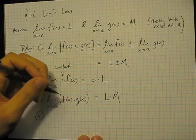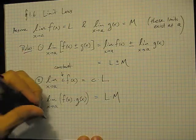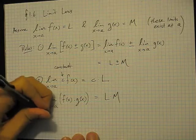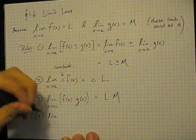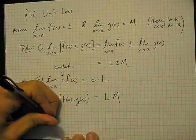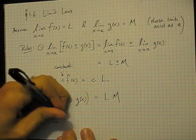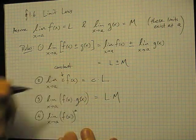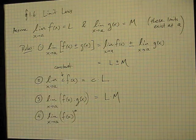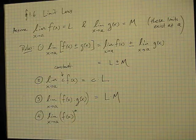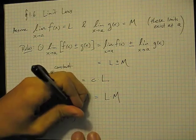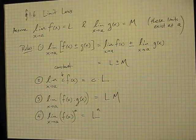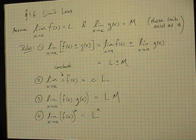Another rule is, I guess, a consequence of the product rule if you apply it over and over again to one function. Suppose you want to take a function and multiply it by itself any number of times. Where n is a positive integer, the limit of f(x)^n will just be L raised to the n power. It's the same rule as the product rule, really.